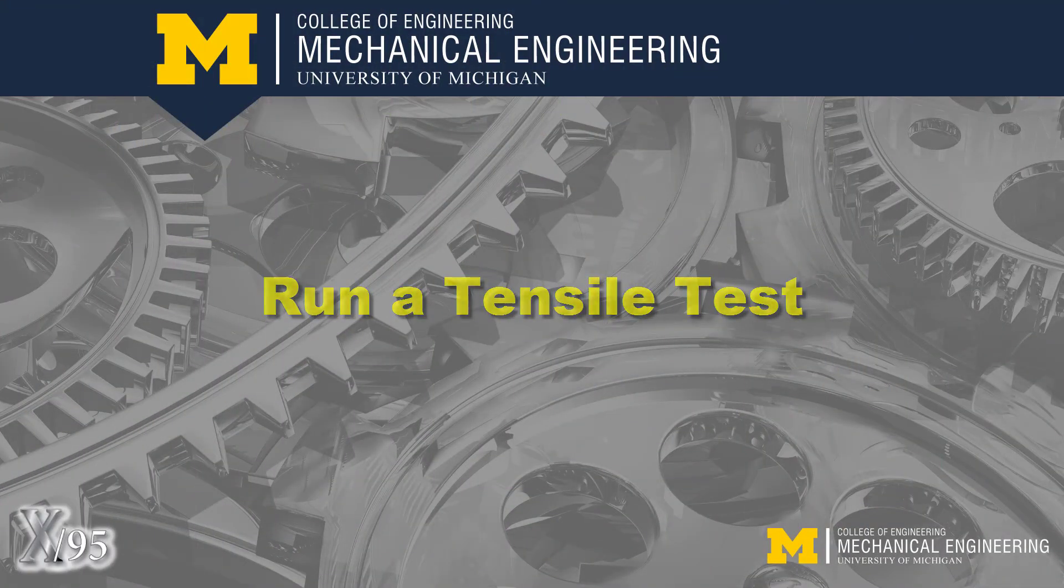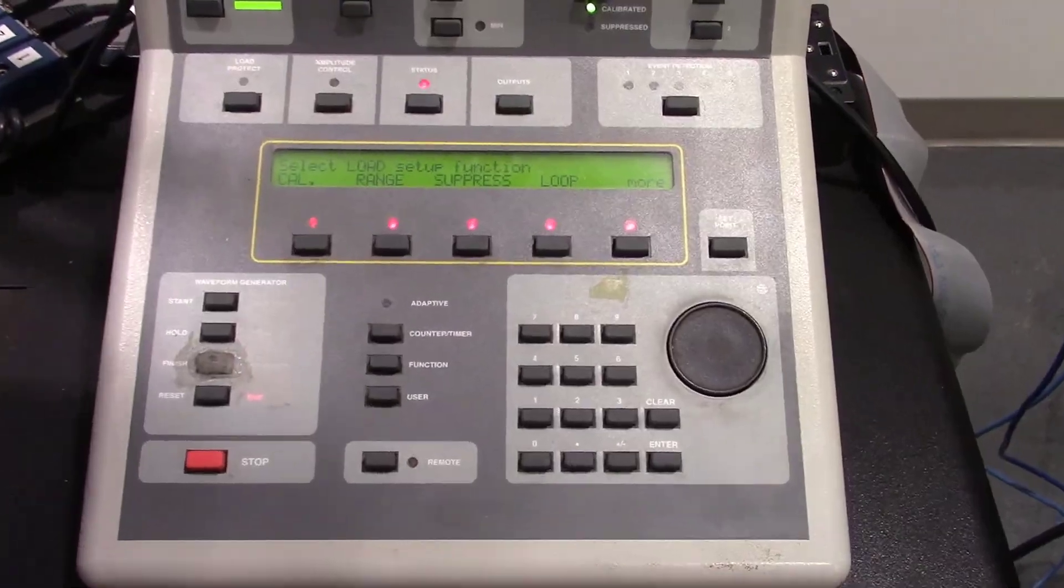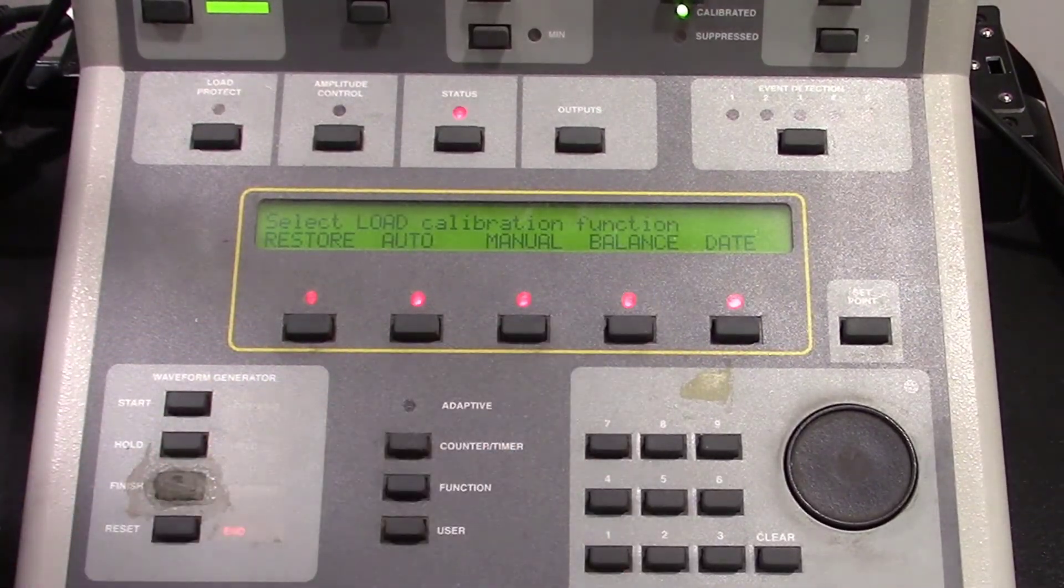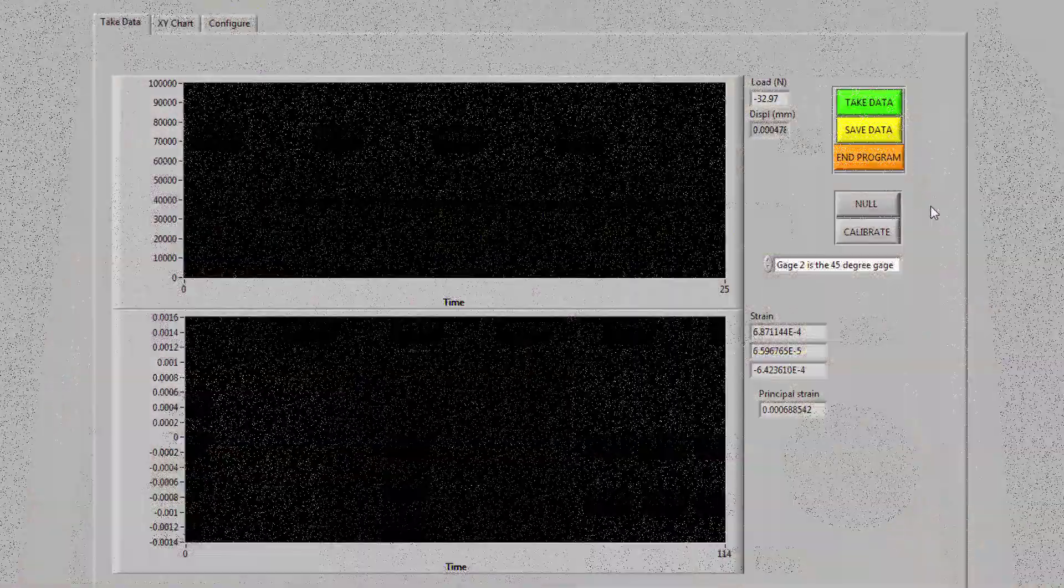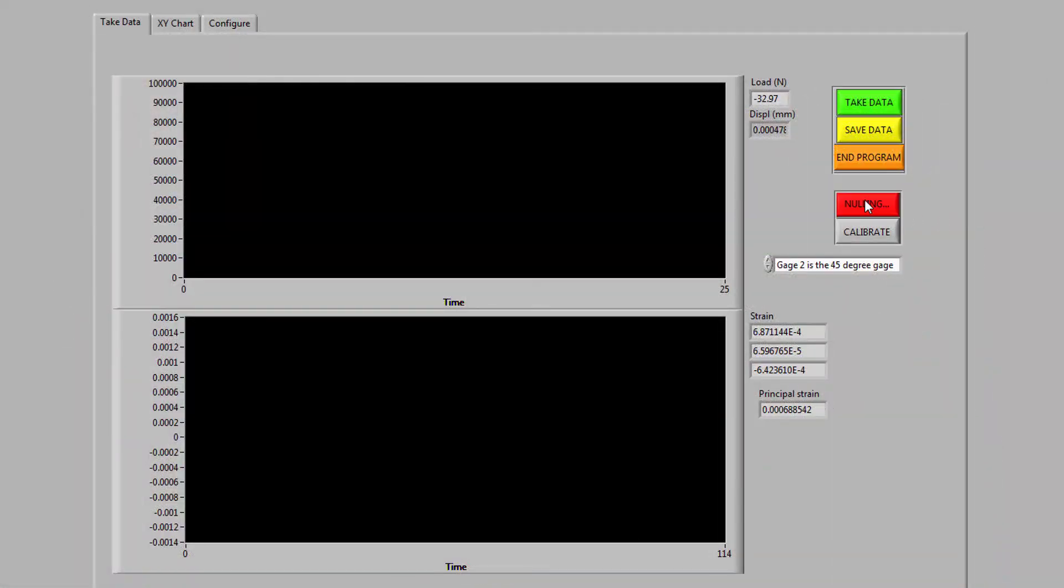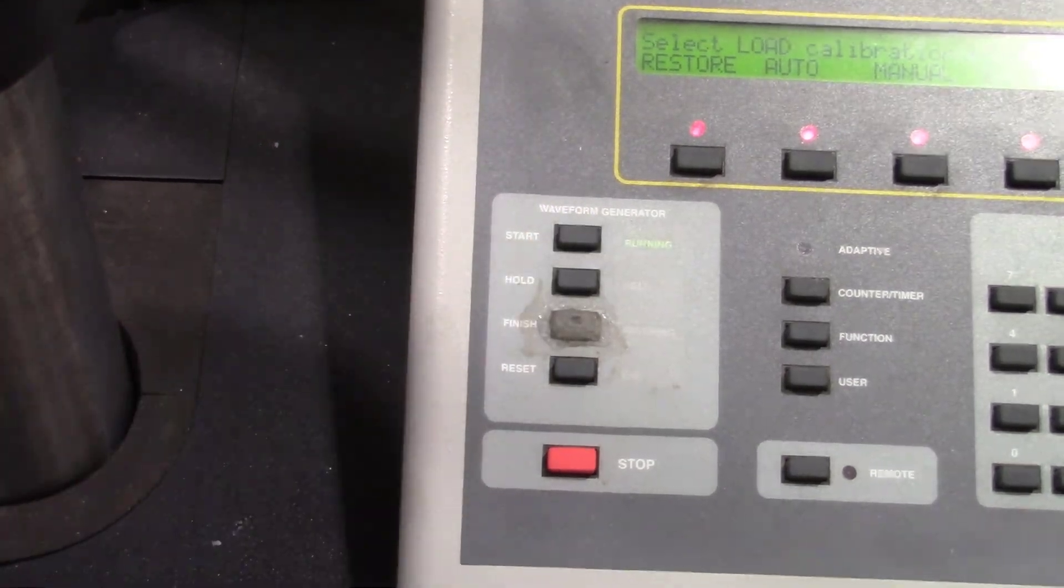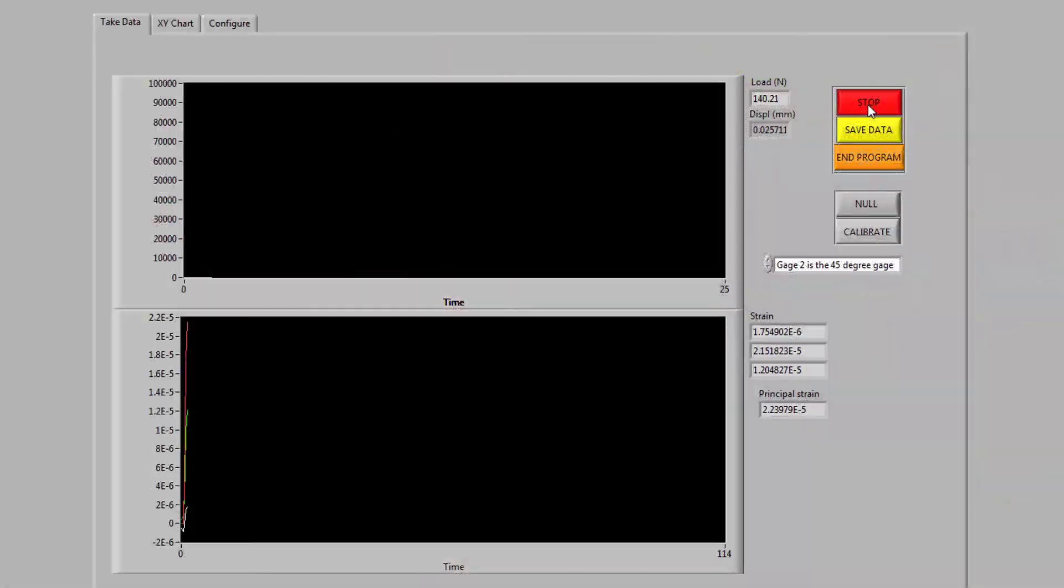Since the load cell tends to drift, let's balance the load cell again by pressing Setup, then Cal, Cal, and Balance. In LabVIEW, null, then calibrate the rosette strain gauge. Press the Take Data button to start data collection. On the INSTRON, press the Start button. You should see the load start to climb as the RAM moves.